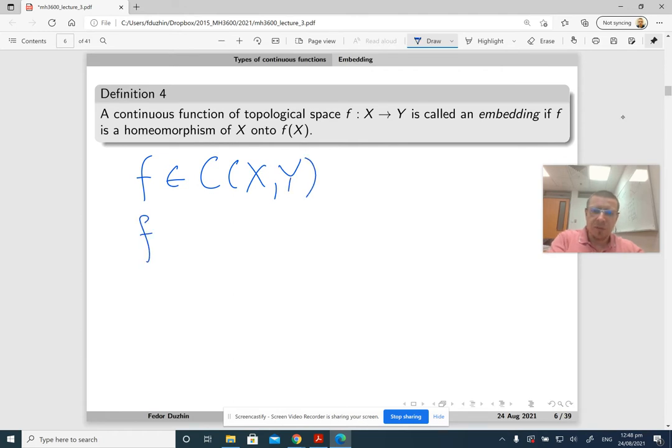f should be one-to-one but not surjective generally. Since f is one-to-one and not assumed to be surjective, it means that f(X) may not be the whole Y. But if you restrict and just look at f(X), at the image of f...